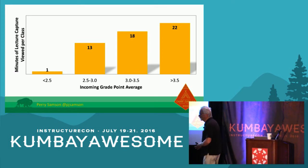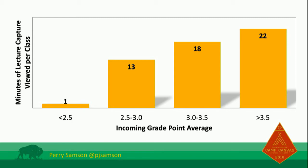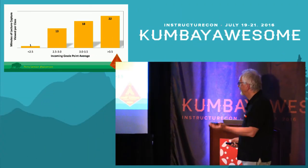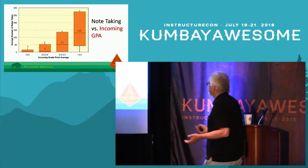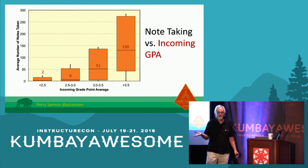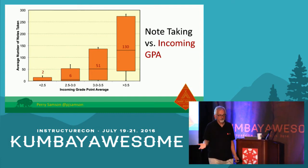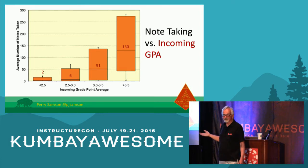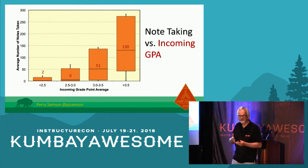Students with a higher grade point answer about 85% of my questions on average. Students with a low grade point only answer about 65% of my questions. The dramatic difference is simply how students participate in class — it's not that they're necessarily cognitively weaker, it's just they're behaving in a way that doesn't allow them to be successful. I can see how much of the lecture captures they view after class. Students with a high grade point average some 22 minutes per class reviewing the lecture. Students with a low grade point — that's about one minute. Two orders of magnitude difference in note-taking as well: 130 words per class for high-GPA students versus about two for low-GPA students.